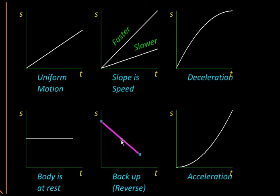While this one here is a straight line, so it is uniform motion, but it has a negative slope. So the body, although it is moving, it is moving backward.